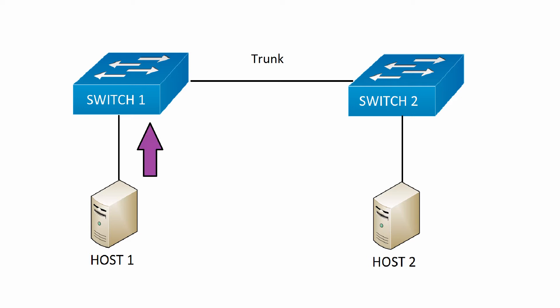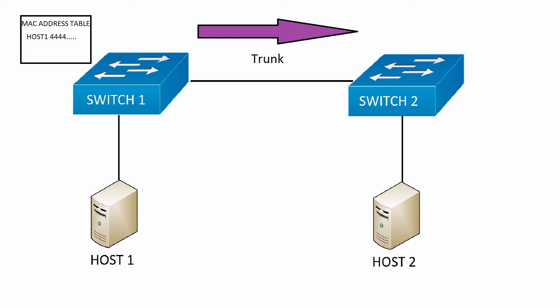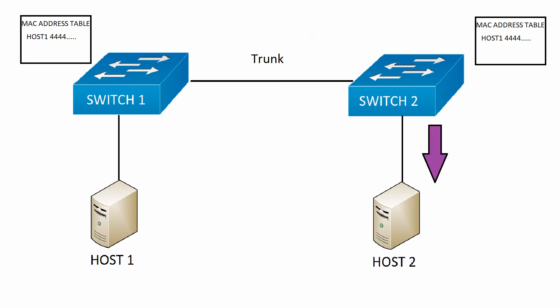Host 1 tries to communicate with host 2 and sends a frame into switch 1. Switch 1 receives the frame, places the source MAC address of host 1 into its MAC address table, and doesn't see anything for host 2. So it sends out a broadcast, which is flooded across all the ports that belong to the same VLAN. Switch 2 receives the broadcast from switch 1, inspects the MAC address, and places host 1's address into its MAC address table. Switch 2 then does a broadcast out of all of its ports that belong to the same VLAN, and host 2 replies.